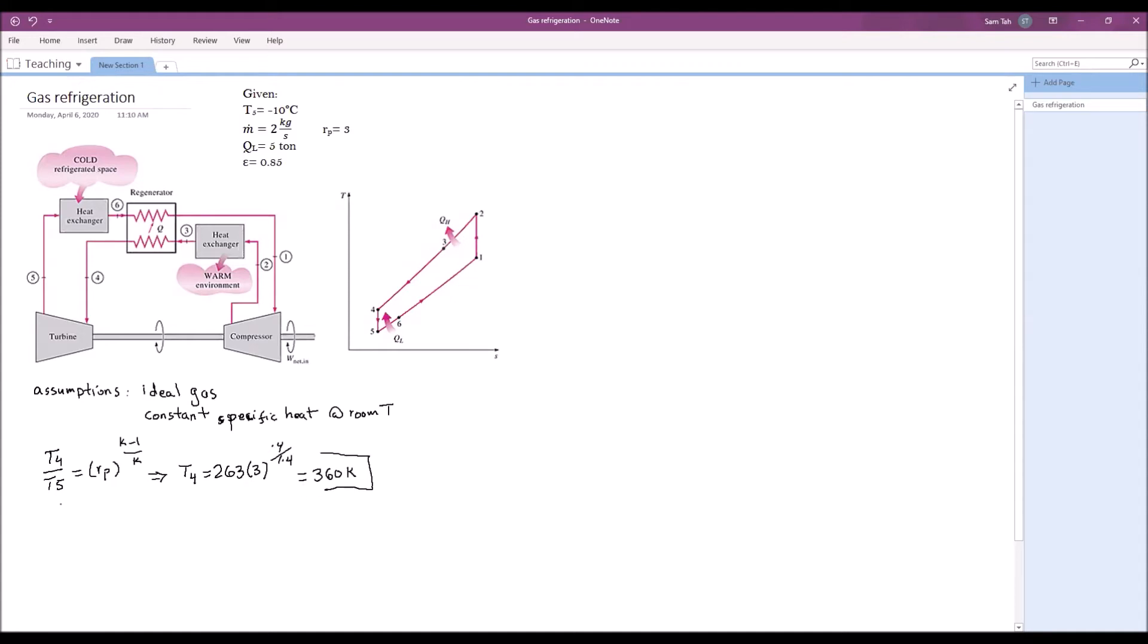Then we can calculate T6 by writing the first law for the cold heat exchanger. Q dot L is m dot times Cp times T6 minus T5. Keep in mind, this is actually m dot times H6 minus H5. So that will give us T6 as T5 plus Q dot L divided by m times Cp.